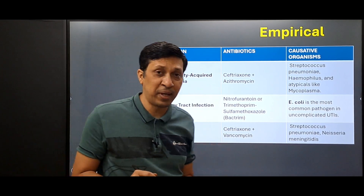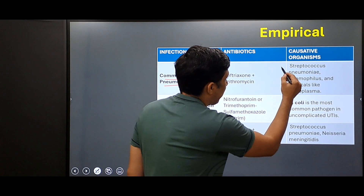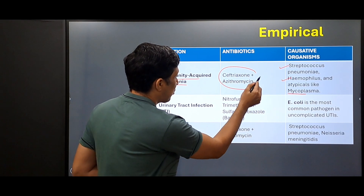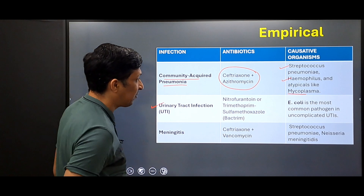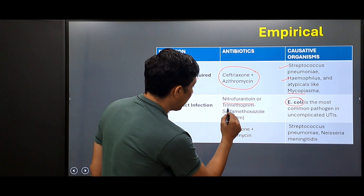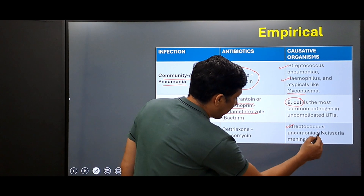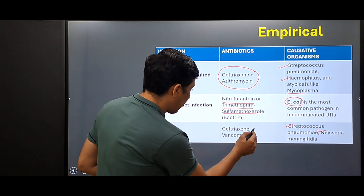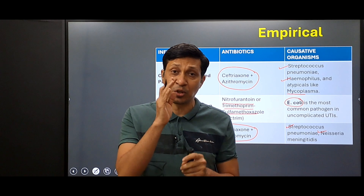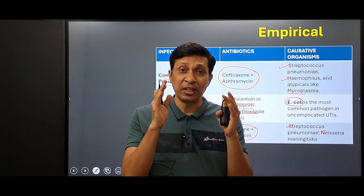In community acquired pneumonia, the common pathogens are Streptococcus pneumoniae, Haemophilus, and atypical organisms like Mycoplasma, so we use ceftriaxone plus azithromycin. For urinary tract infection, the most common pathogen is E. coli, and we use either nitrofurantoin or trimethoprim-sulfamethoxazole. In meningitis, common organisms are Streptococcus pneumoniae and Neisseria meningitidis, and we use ceftriaxone plus vancomycin. This is empirical therapy — covering likely pathogens before culture results.